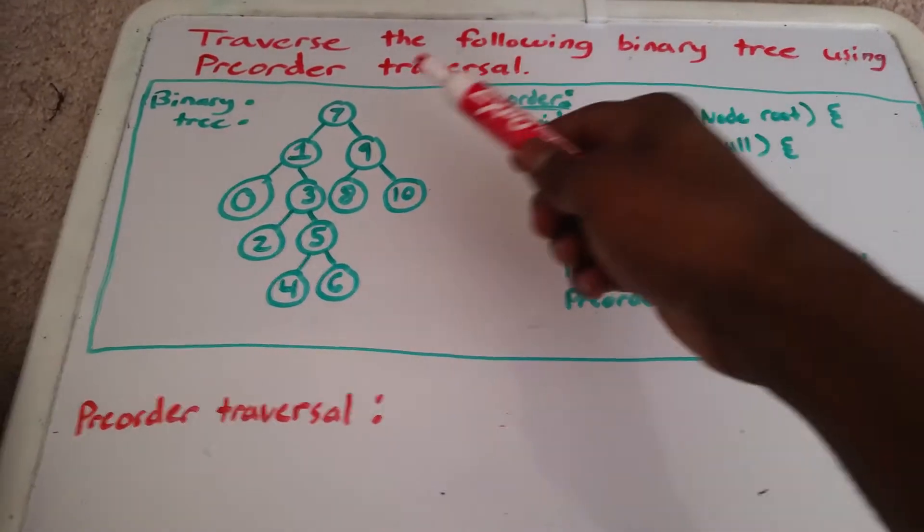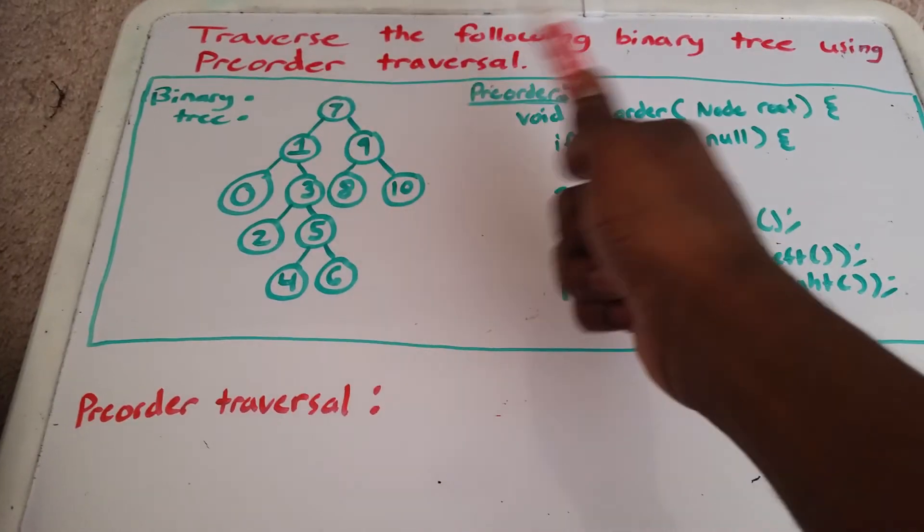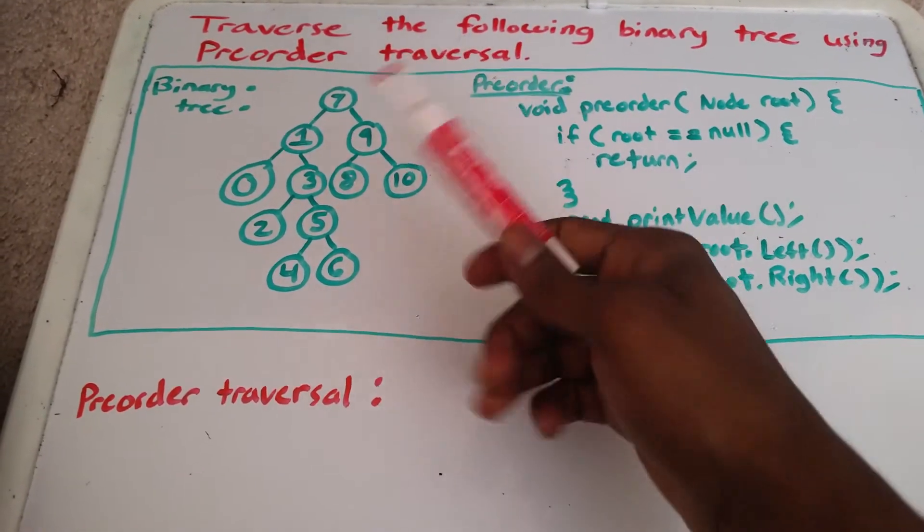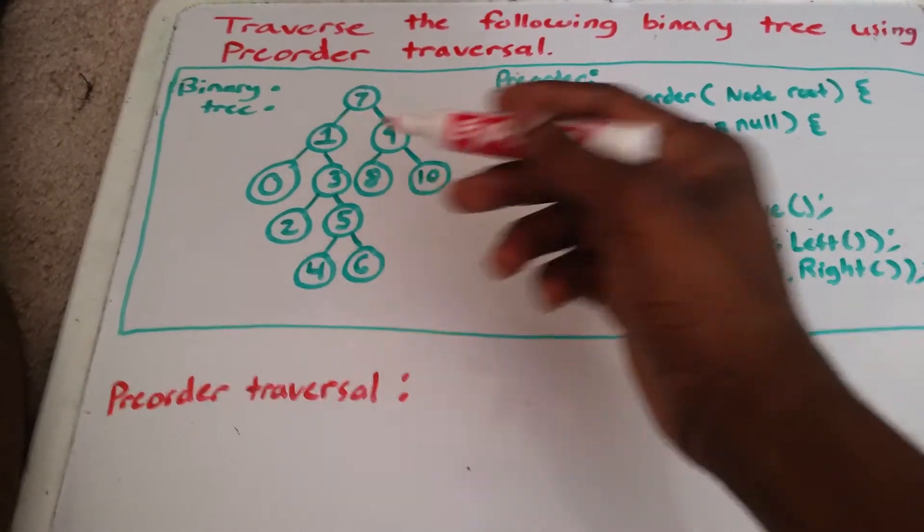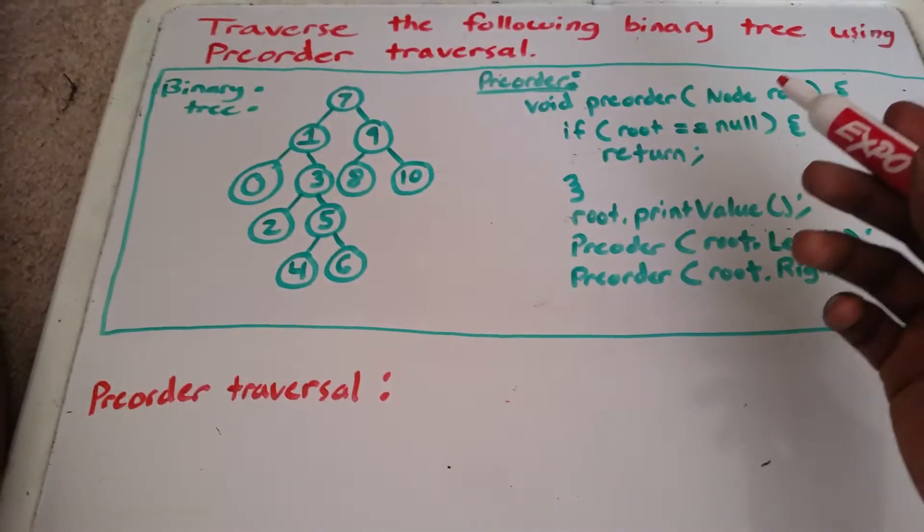So here we have, we want to traverse the following binary tree using pre-order traversal. So I have the binary tree here to the left and the code here to the right for pre-order.